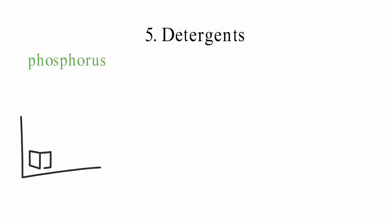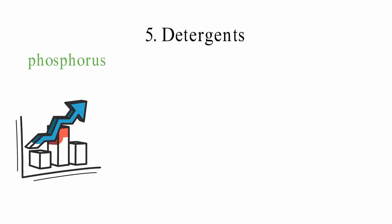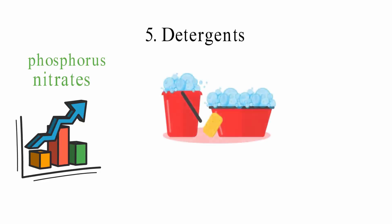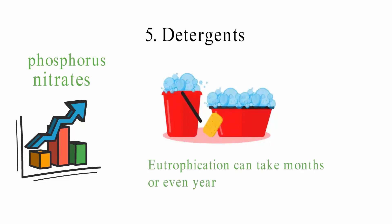Detergents: Phosphate-based detergents can raise the level of phosphorus in water. Some detergents also have nitrates in them. Most detergents are easy to dissolve in water. When these compounds are used or thrown away in the wrong way, they can pollute the water with nutrients. Eutrophication can take months or even years to happen in nutrient-polluted water.